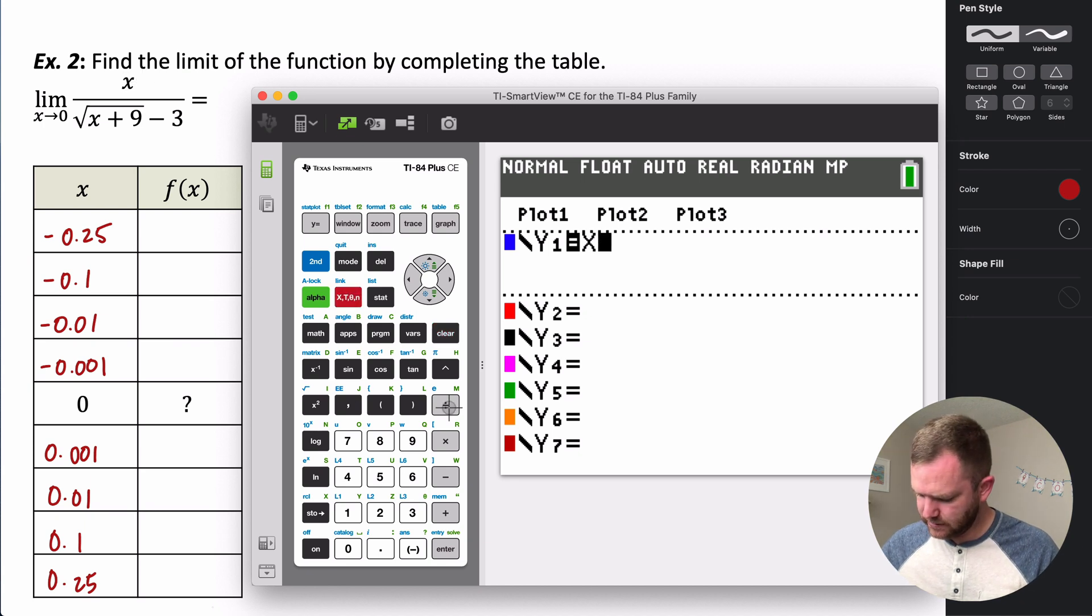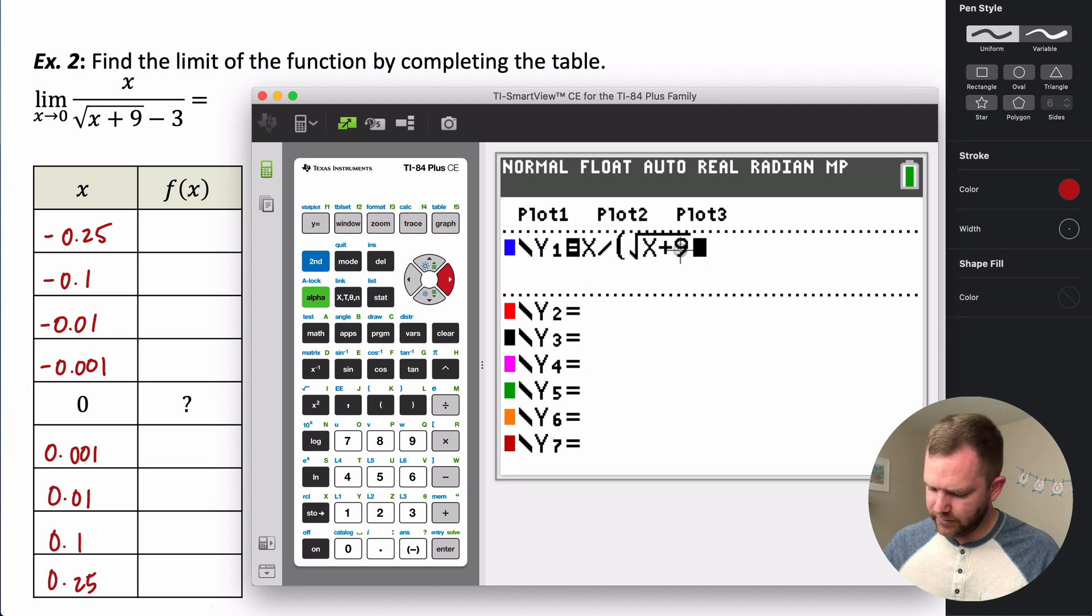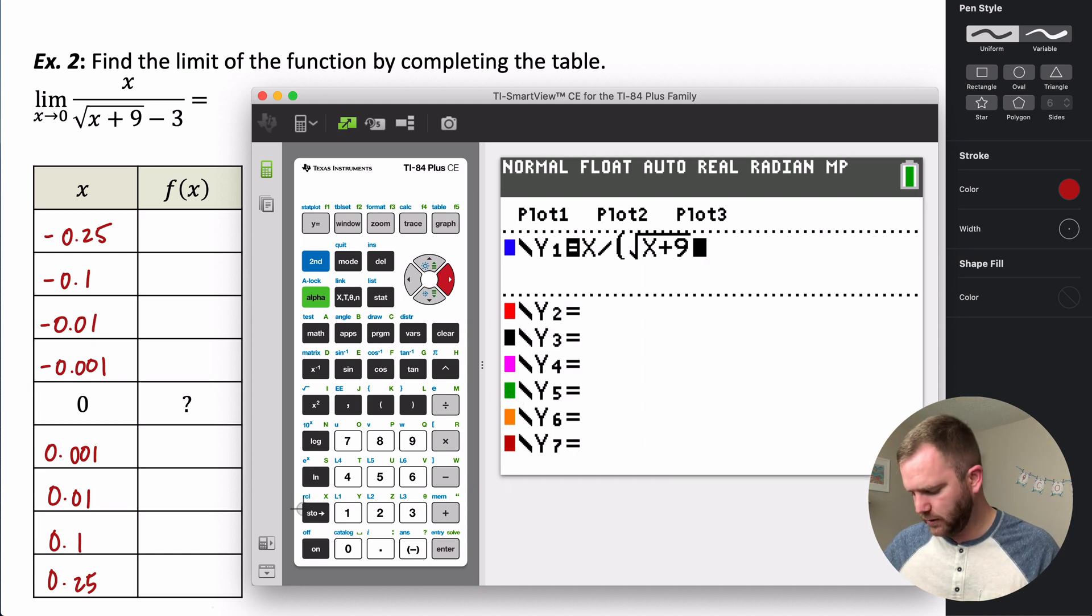So it's x divided by, and then put in parentheses, the square root. So it's second, and then this x squared gives us the square root. x plus 9, and then right arrow out of that so you're not inside your square root anymore. And then actually, sorry, minus 3. And then close your parentheses.